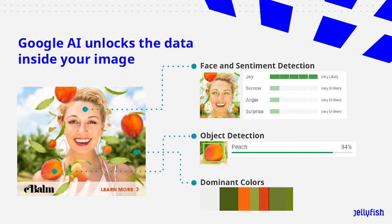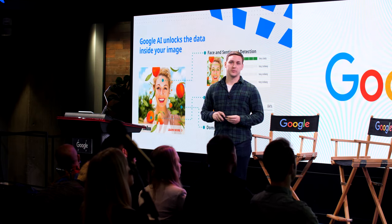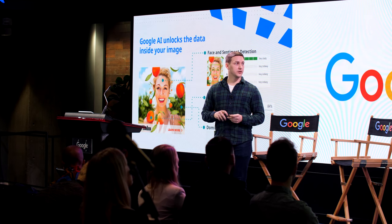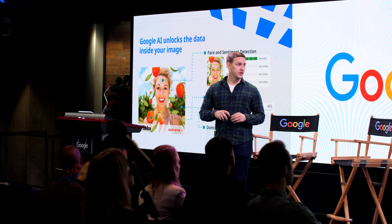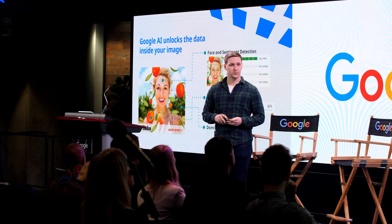As a brief overview, the Vision API can basically take an image and translate the unstructured data of an image file into a structured entity with specific features. Some of the examples that can come out are face and sentiment detection — so specific facial expressions and their likelihood — it can find objects in an image, dominant colors, and plenty of other things as well.